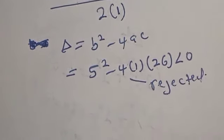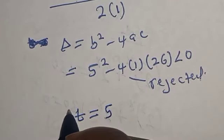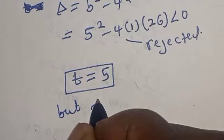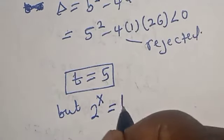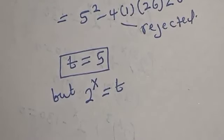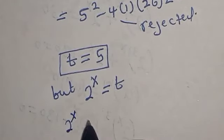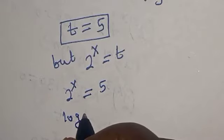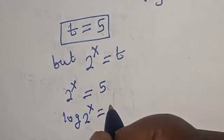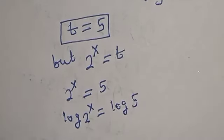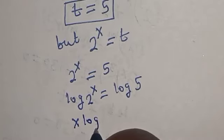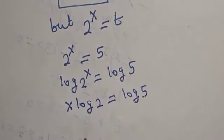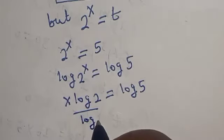The only solution we have is t equals 5. But since 2 raised to the power s equals t, we now have 2 raised to the power s equals 5. Let's take the log of both sides: log of 2 raised to the power s equals log 5.